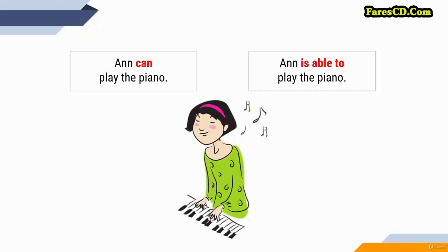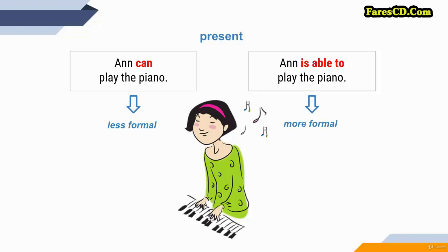Let's see what's the difference between BE ABLE TO and CAN. In the present: 'Anne can play the piano' — 'Anne is able to play the piano.' In the present, the only difference between CAN and BE ABLE TO is that BE ABLE TO is more formal. Otherwise, as meaning, they have the same idea — physical ability or mental ability.